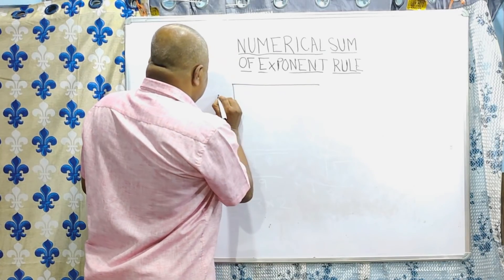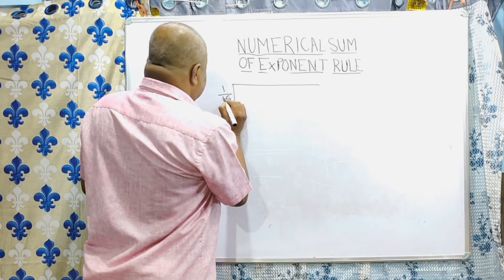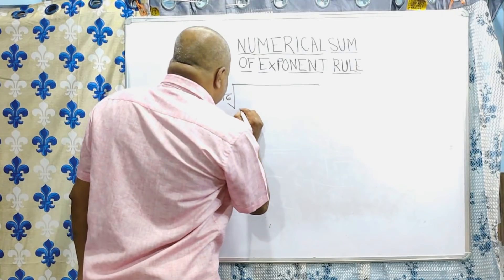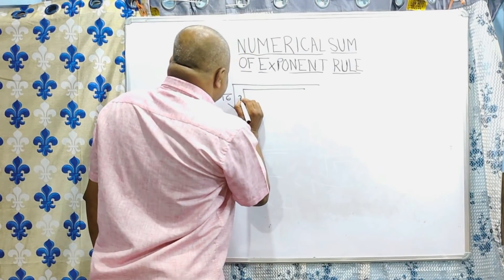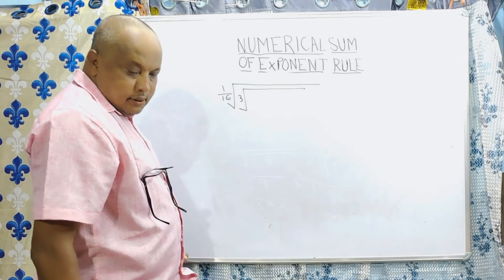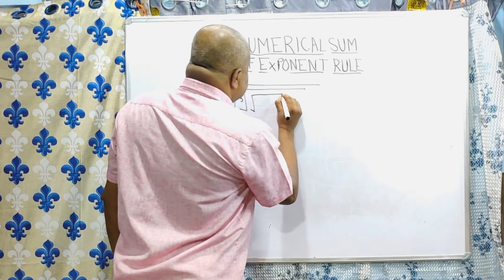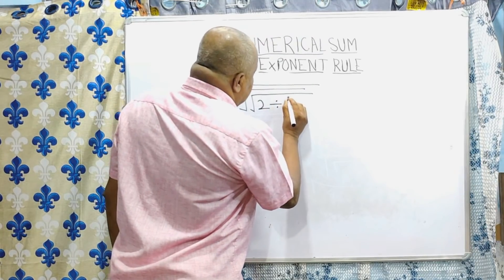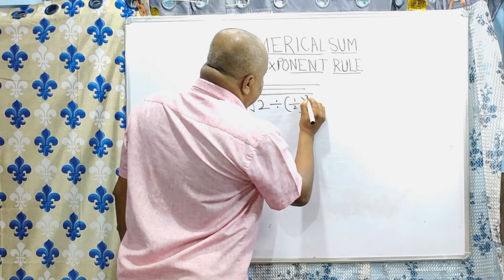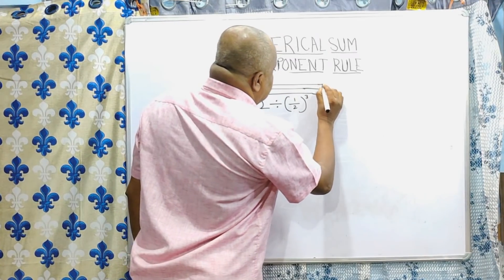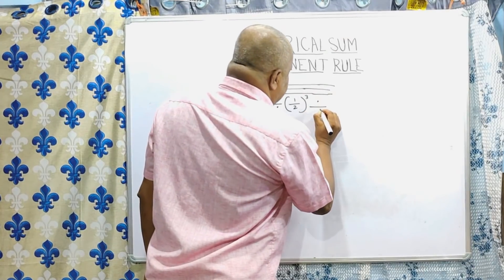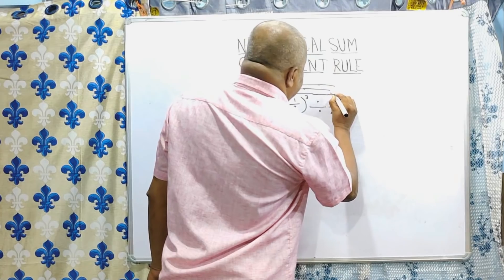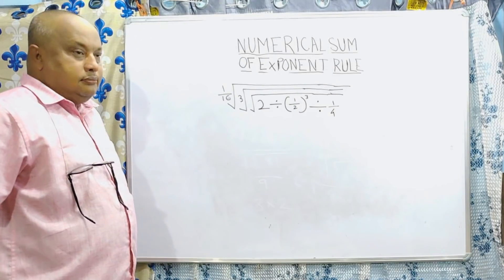The problem is: square root of 1 by 16, within the square root mark. Then again square root within the square root mark. This is 3. Then again square root. Then 2 divided by half to the power 3, to the power 3 divided by, again divided by 1 by 4. Again divided by 1 by 4. And this is the problem.